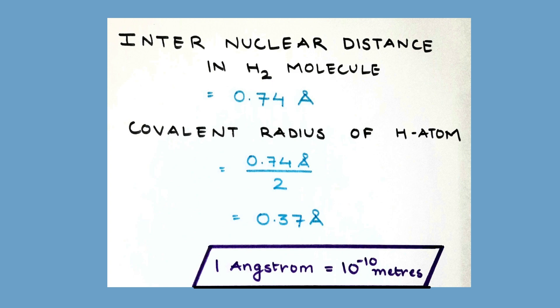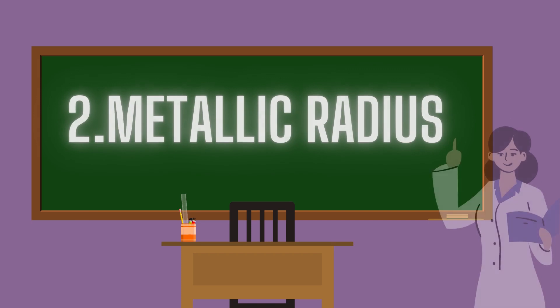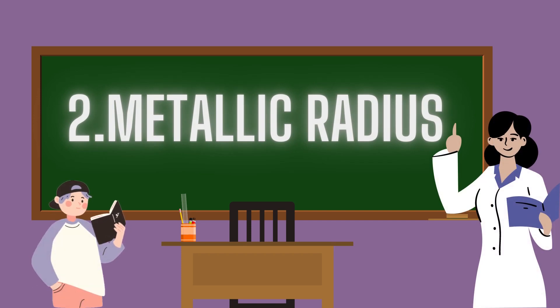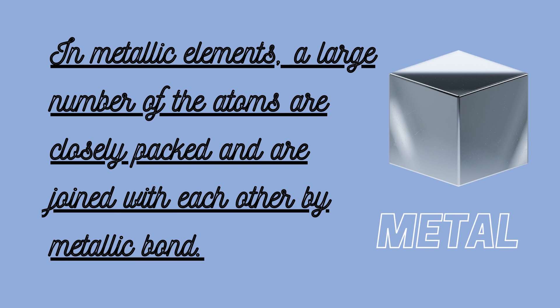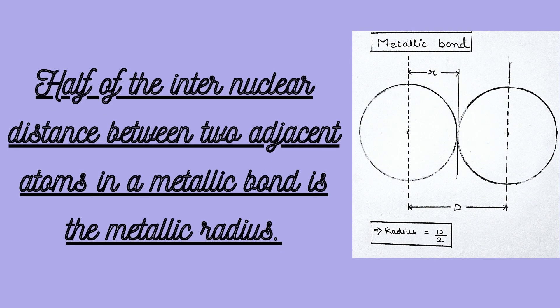Next, we will be talking about metallic radius. As the name suggests, metallic radius has something to do with metal. In metallic elements, a large number of atoms are closely packed and joined with each other by metallic bond. Half of the internuclear distance between two adjacent atoms in a metallic bond is the metallic radius.